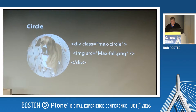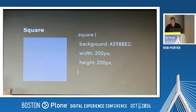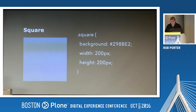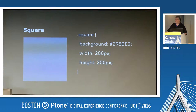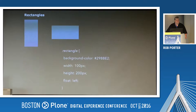Next we'll move on to square, which is pretty much the same height as width. It's the easiest shape — everything on the web is pretty much a square or rectangle. Where rectangles are, one of them is wider or higher than the other.